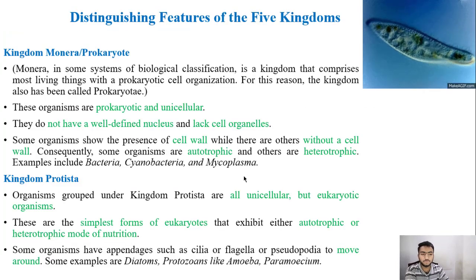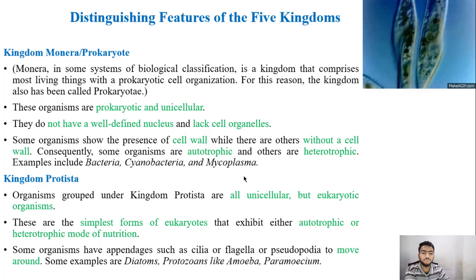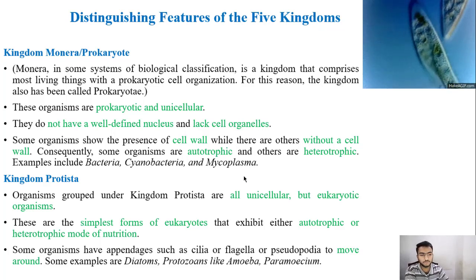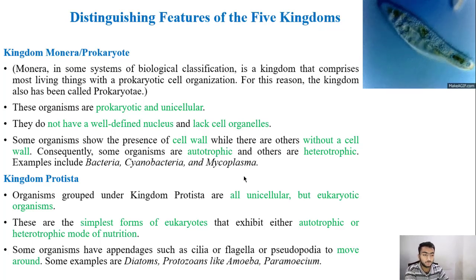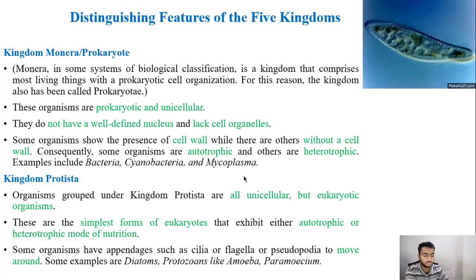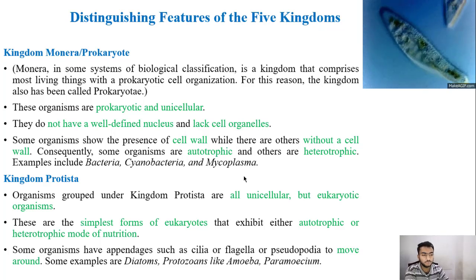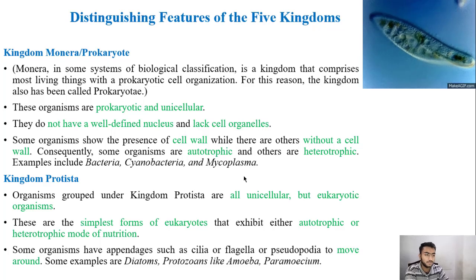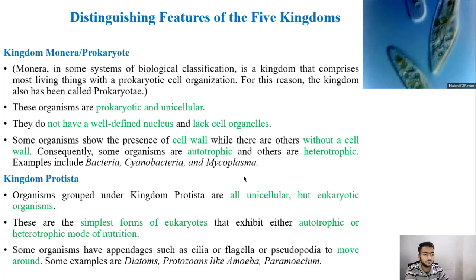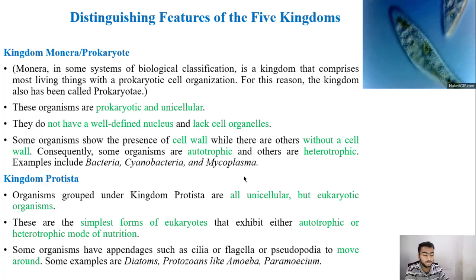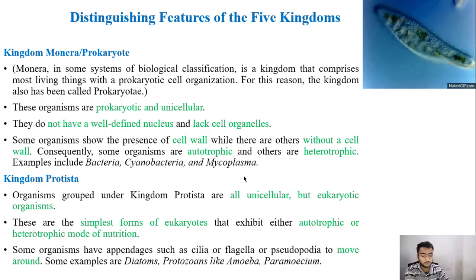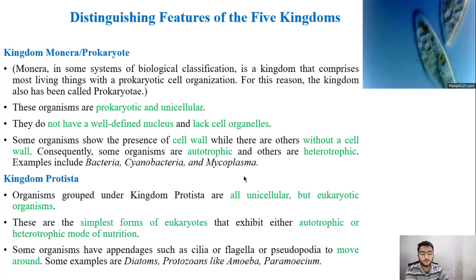The first kingdom we are going to see is Kingdom Monera, also known as Kingdom Prokaryotae. On the top right corner of the screen you can see a moving GIF image of a paramecium, which belongs to Kingdom Protista — found mostly in fresh or stagnant water, observed as a motile living organism under a microscope. It is a unicellular eukaryotic organism classed as Protista.